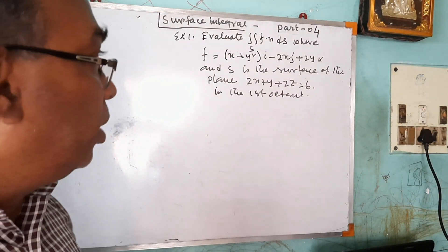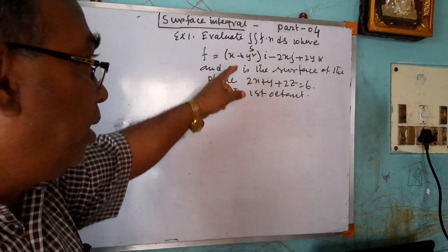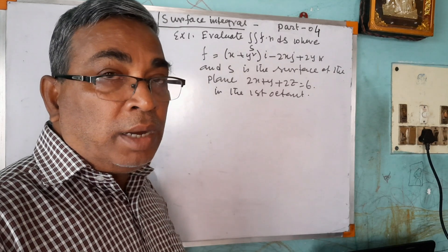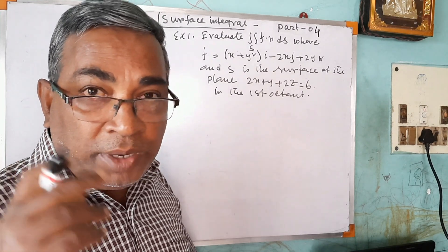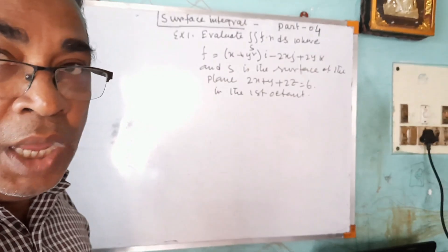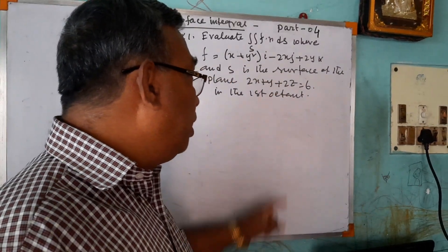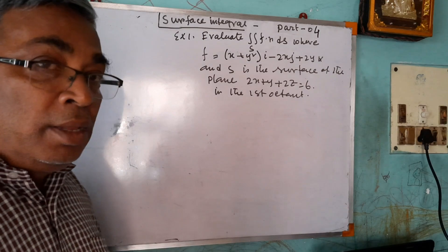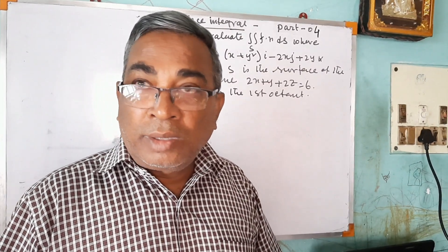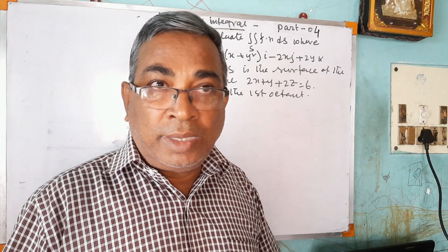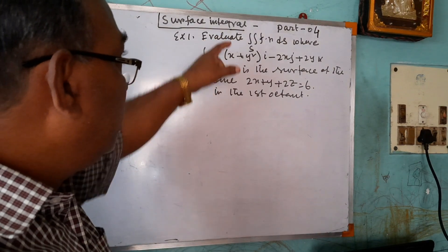The learner will be able to understand how to solve a problem — that is, evaluate the surface integral when f is given and s is the surface on the plane. Earlier we did the plane, the cylinder, the sphere, and the rectangle. Now the surface is a plane — a 3D surface. A double integral with a 3D surface is known as a surface integral. Without wasting time, I am just solving this sum.